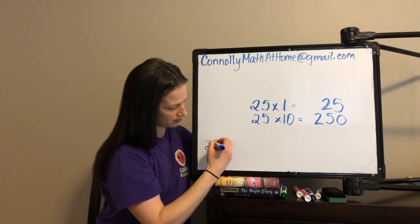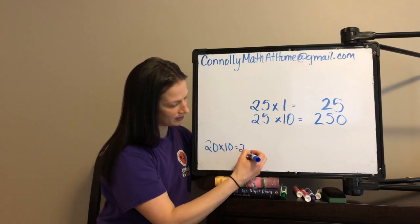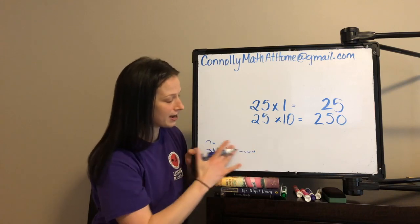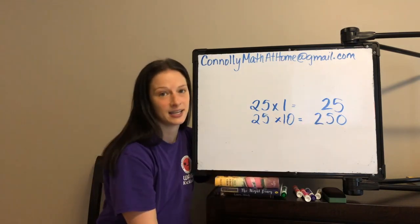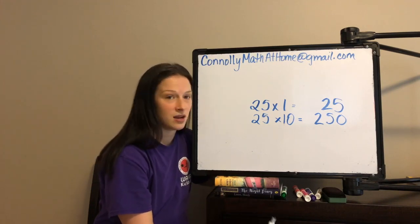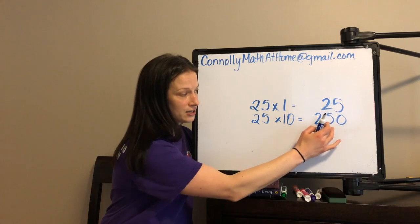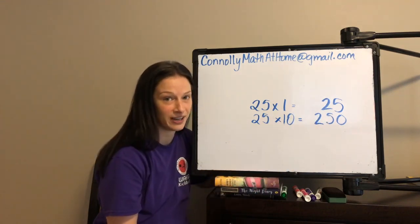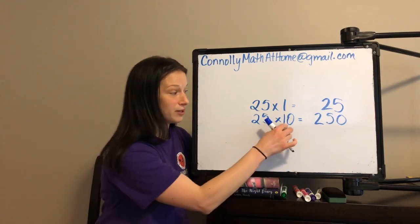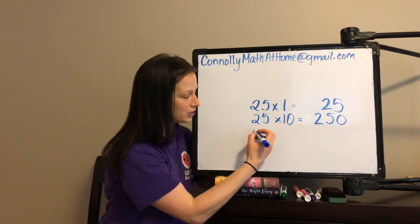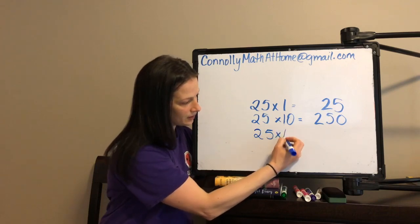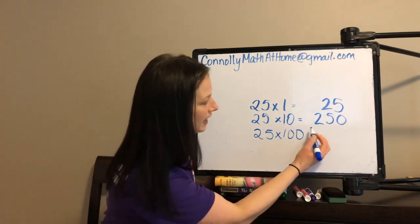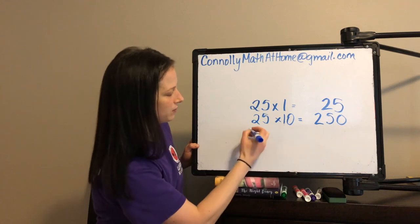Let's look at what happened with the digit 2. The digit 2 was in the 10s place, and when we made 25 ten times greater, the digit 2 shifted to the 100s place and got 10 times greater as well. So it used to represent 2 groups of 10; now it represents 2 groups of 100. And just so you know, if we make 20 ten times greater, it's 200. So when a factor gets 10 times greater, the product gets 10 times greater. When a number gets 10 times greater, the digits are shifting one place value over, which means each digit is also getting 10 times greater.